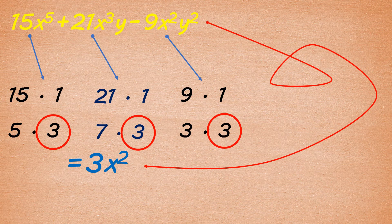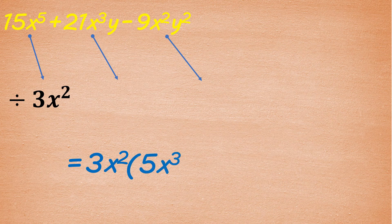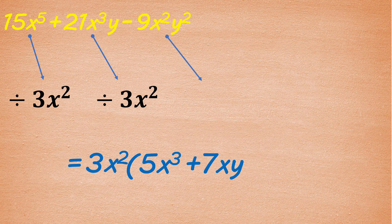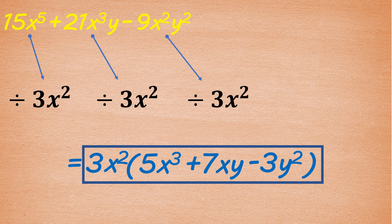Variable y is not included since not all three terms have this variable. For the remaining factor, divide each term by the common factor 3x squared. 15x to the 5th divided by 3x squared is 5x cubed. 21x cubed y divided by 3x squared is 7xy. And negative 9x squared y squared divided by 3x squared is 3y squared. Therefore, the factors are 3x squared and 5x cubed plus 7xy minus 3y squared.